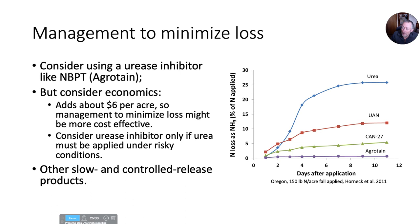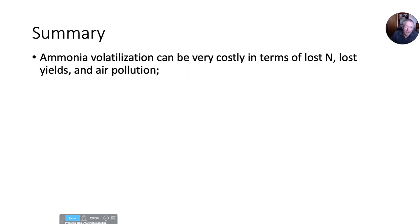There are products that inhibit the hydrolysis of urea by inhibiting the activity of the urease enzyme. NBPT, contained in the product called Agrotain, really does a good job — you can see that days after application Agrotain can really reduce loss to volatilization. There are also many slow and controlled release nitrogen products like coated urea products.